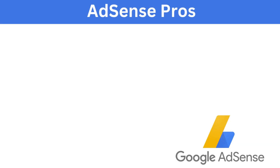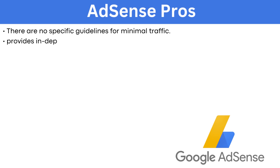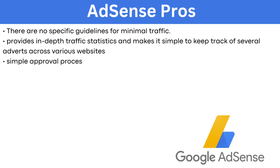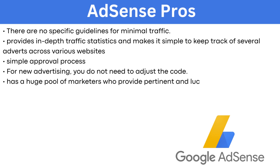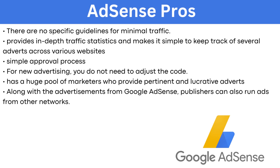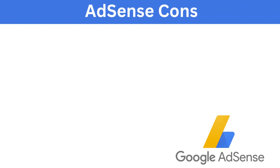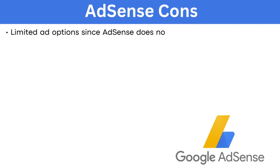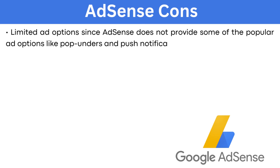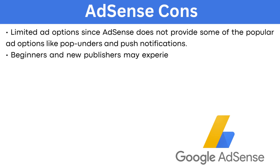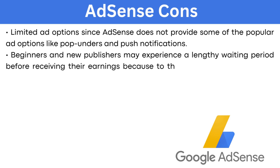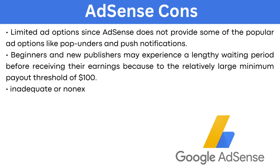The pros of AdSense: there are no specific guidelines for minimal traffic; it provides in-depth traffic statistics and makes it simple to track several adverts across various websites; simple approval process; for new advertising, you do not need to adjust the code; it has a huge pool of marketers who provide pertinent and lucrative adverts; and publishers can also run ads from other networks alongside AdSense ads. The cons of AdSense include limited ad options — AdSense does not provide some popular ad options like pop-unders and push notifications — a lengthy waiting period before receiving earnings due to the $100 minimum payout threshold, and inadequate or non-existent human customer assistance.